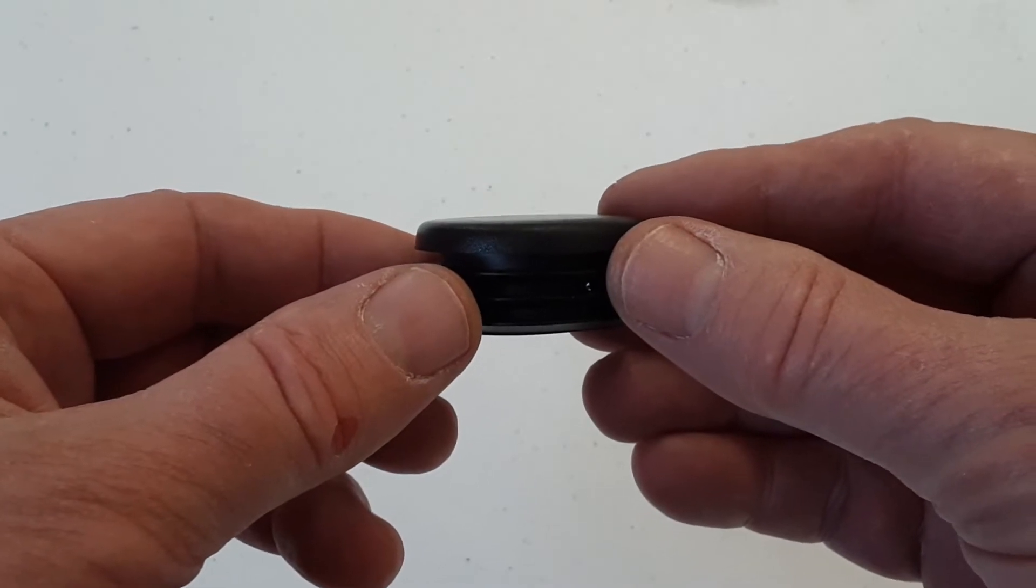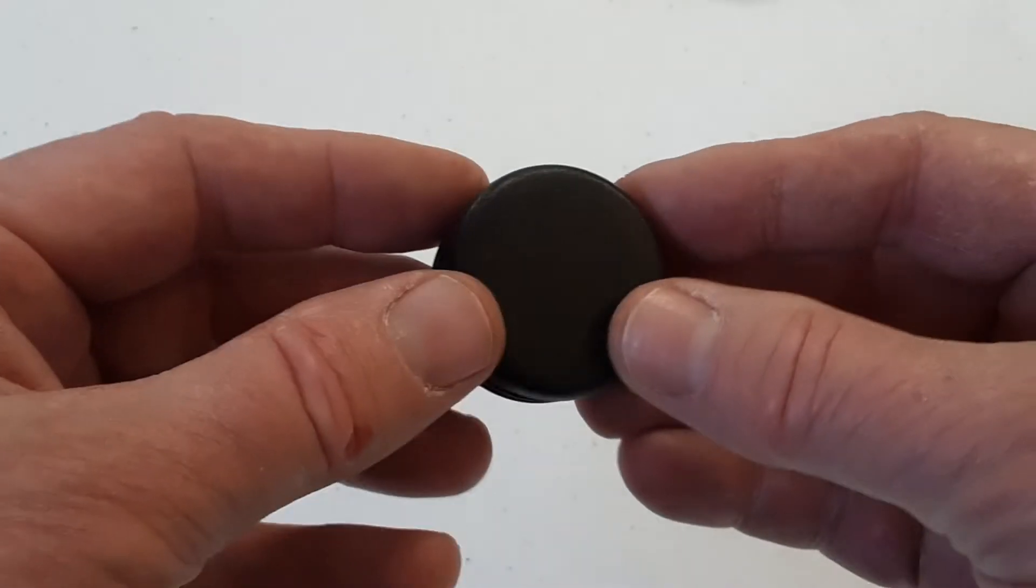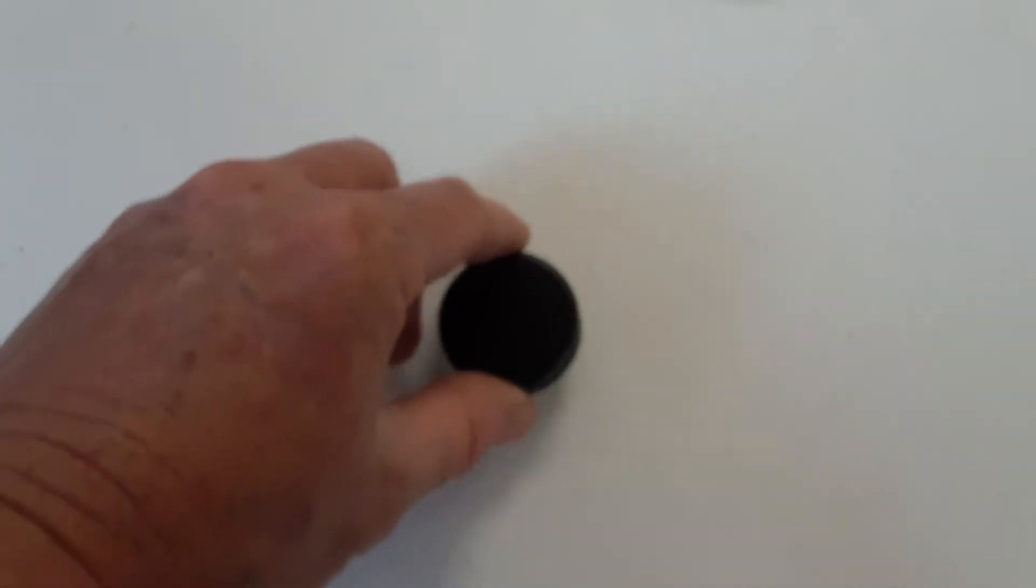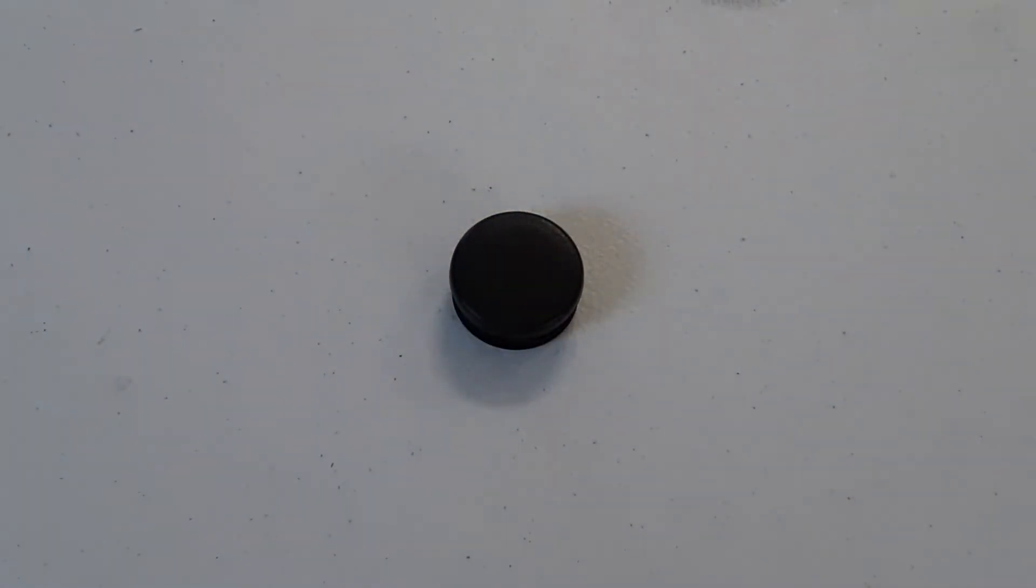And then you just go ahead and press fit it into your scupper hole and let it cool down in there and it will form to the scupper hole. And it doesn't get hot enough to where it's going to cause any damage to the kayak if you do it right.